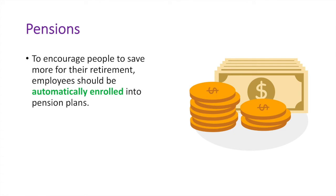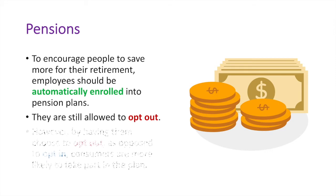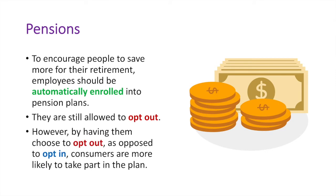To encourage people to save more for their retirement, employees should be automatically enrolled into pension plans. They are still allowed to opt out. However, by having them choose to opt out as opposed to opt in, consumers are more likely to take part in a plan. Research supports the claim that people are influenced by default bias and will stick with whatever choice is initially made for them. In this case, if they are put into a savings plan by default, they may avoid opting out.